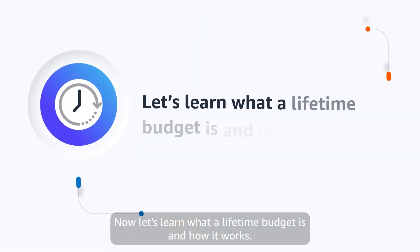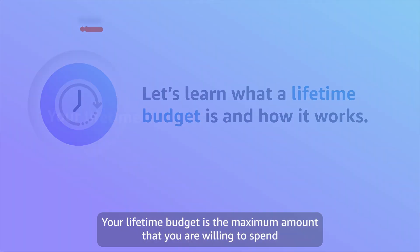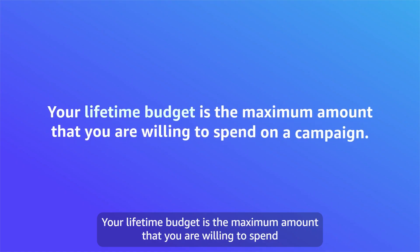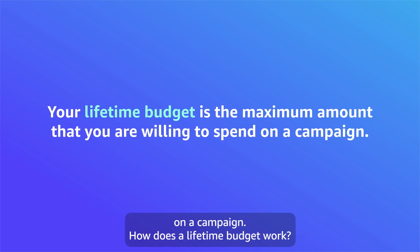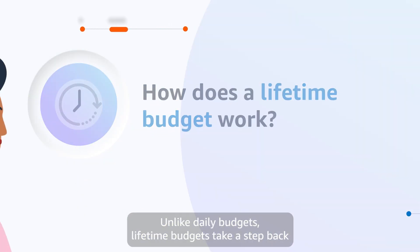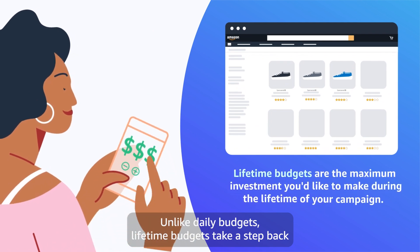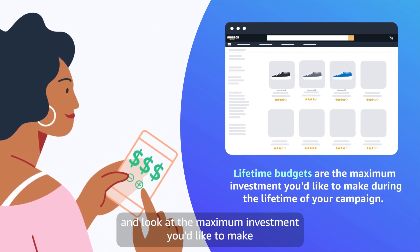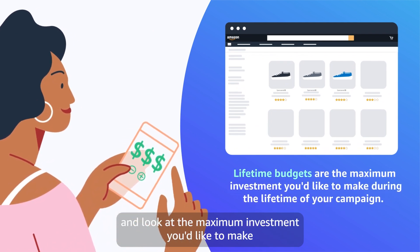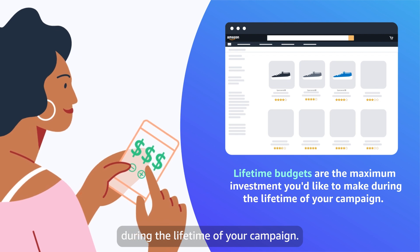Now let's learn what a lifetime budget is and how it works. Your lifetime budget is the maximum amount that you are willing to spend on a campaign. Unlike daily budgets, lifetime budgets take a step back and look at the maximum investment you'd like to make during the lifetime of your campaign.